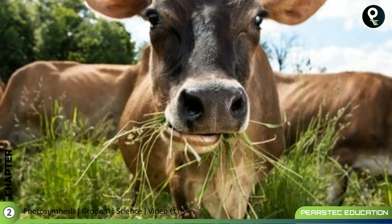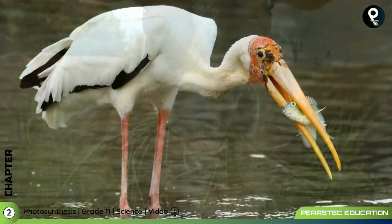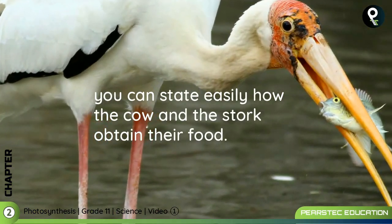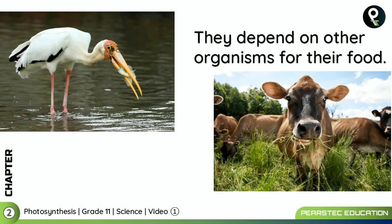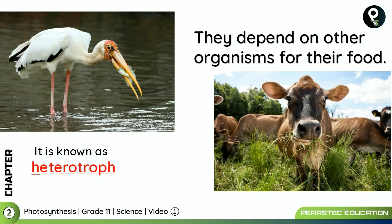That is a cow eating grass, and that's a stork. You can easily state how the cow and the stork obtain their food — the cow takes grass, and the stork takes fish. They depend on other organisms for their food. Even you depend on other organisms for food, whether you're vegetarian or non-vegetarian. Every organism depends on another organism for food. This is known as the heterotrophic mode of nutrition.